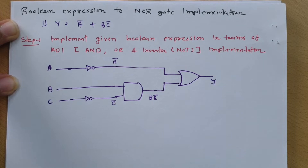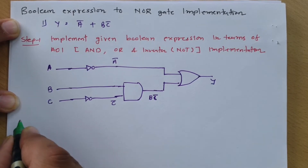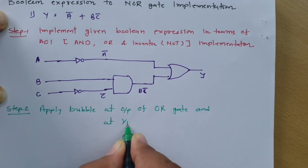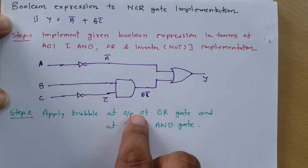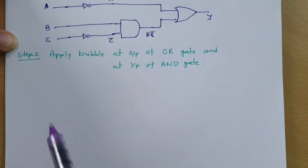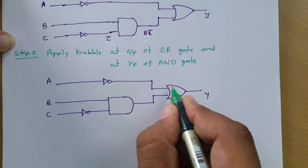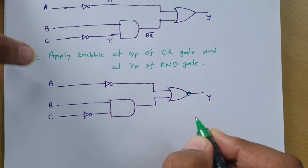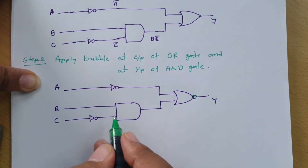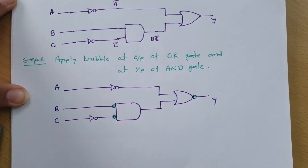The next step is to apply a bubble at the output of the OR gate and apply a bubble at the input of the AND gate. In this step we apply bubble at output of OR gate and at input of AND gate. In the circuit, at the output of this OR gate we connect a bubble, and at the input of the AND gate we connect a bubble. This is step number two.